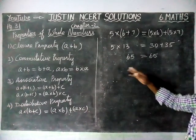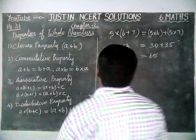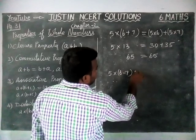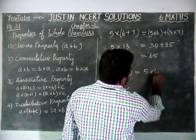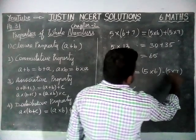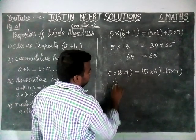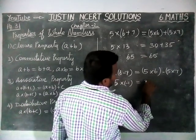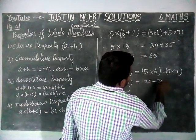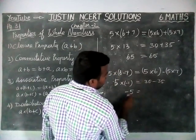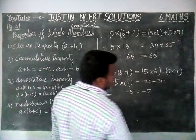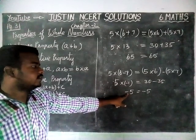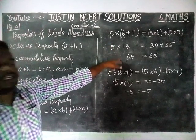This confirms the distributive property of multiplication over addition. Now we check for subtraction: 5 into (6 minus 7) equals 5 into (minus 1) equals minus 5, and 5 into 6 minus 5 into 7 equals 30 minus 35 equals minus 5. Left hand side equals right hand side, but the answer is not a whole number. Therefore, the distributive property applies only to multiplication over addition.